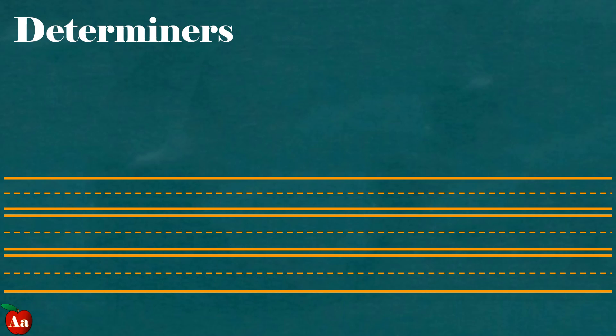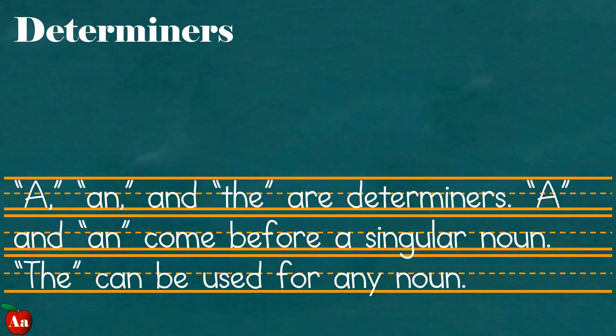Determiners. A, an, and the are determiners. A and an come before a singular noun. The can be used for any noun.